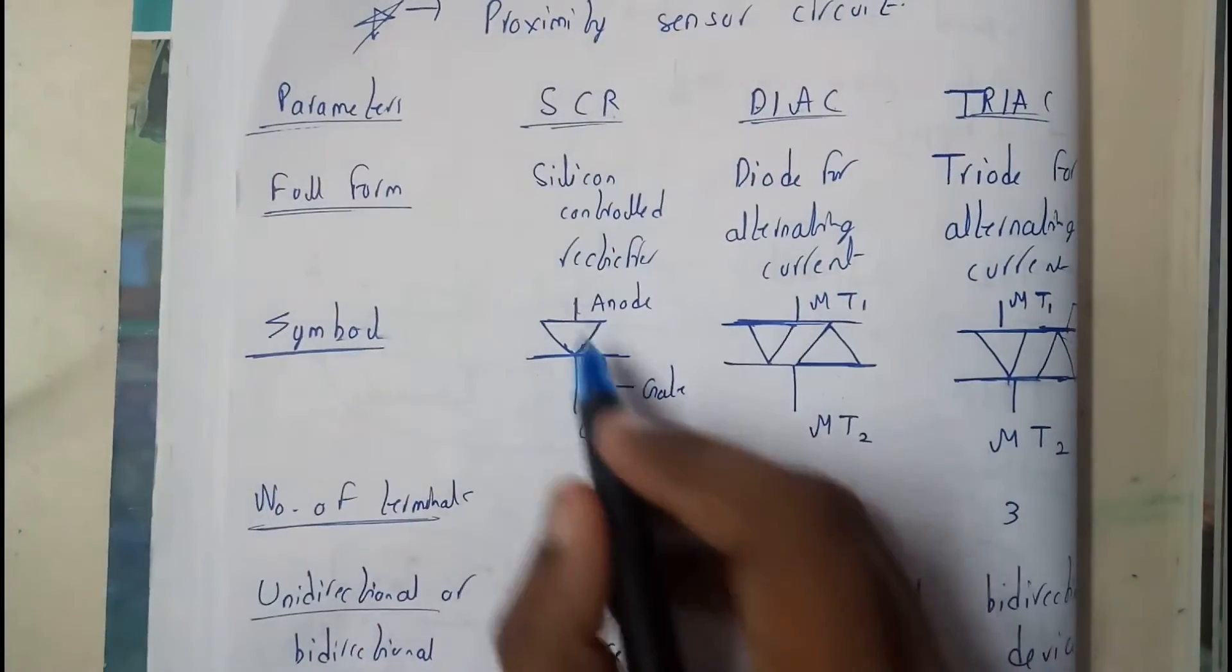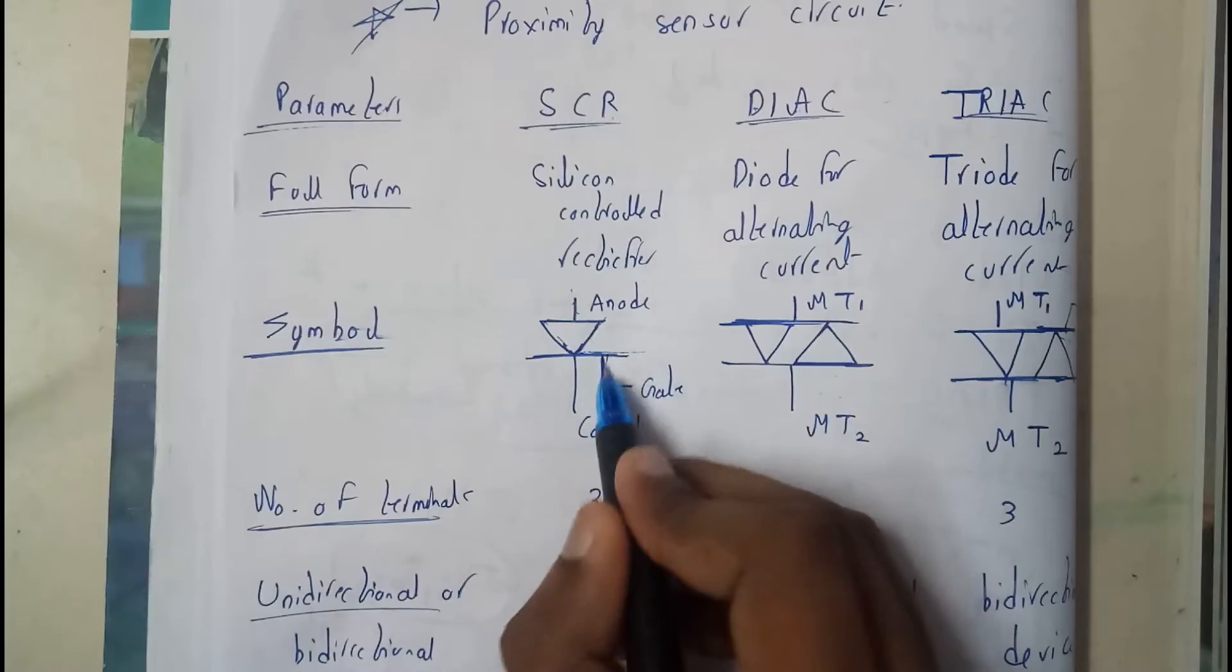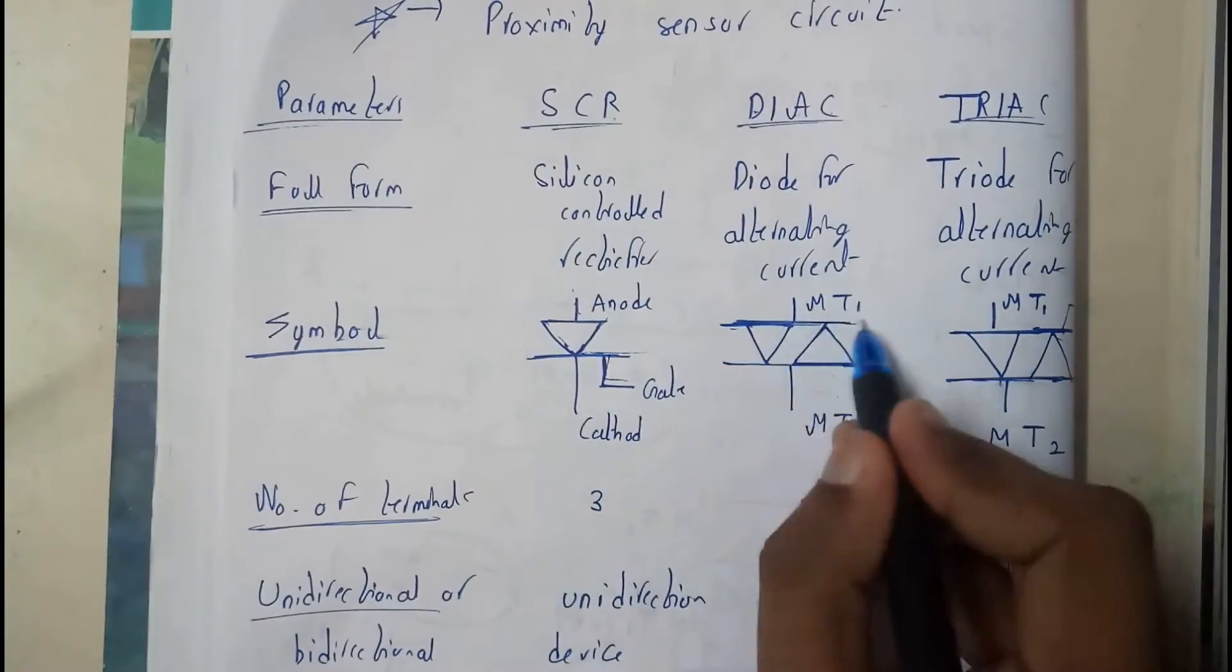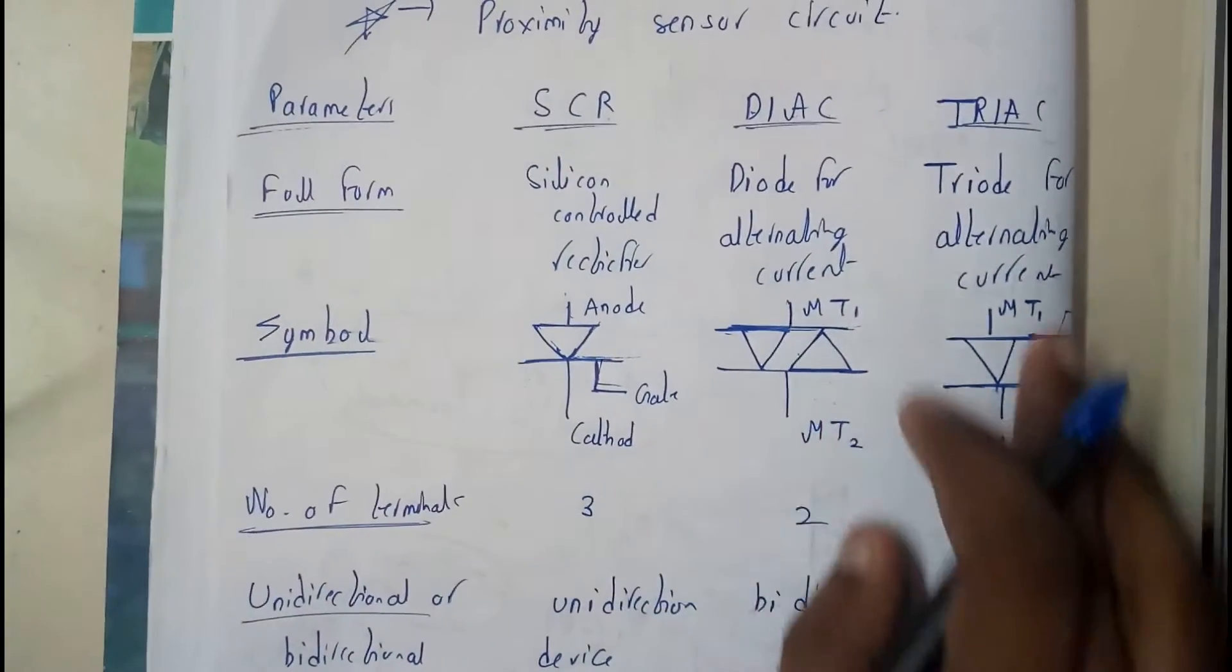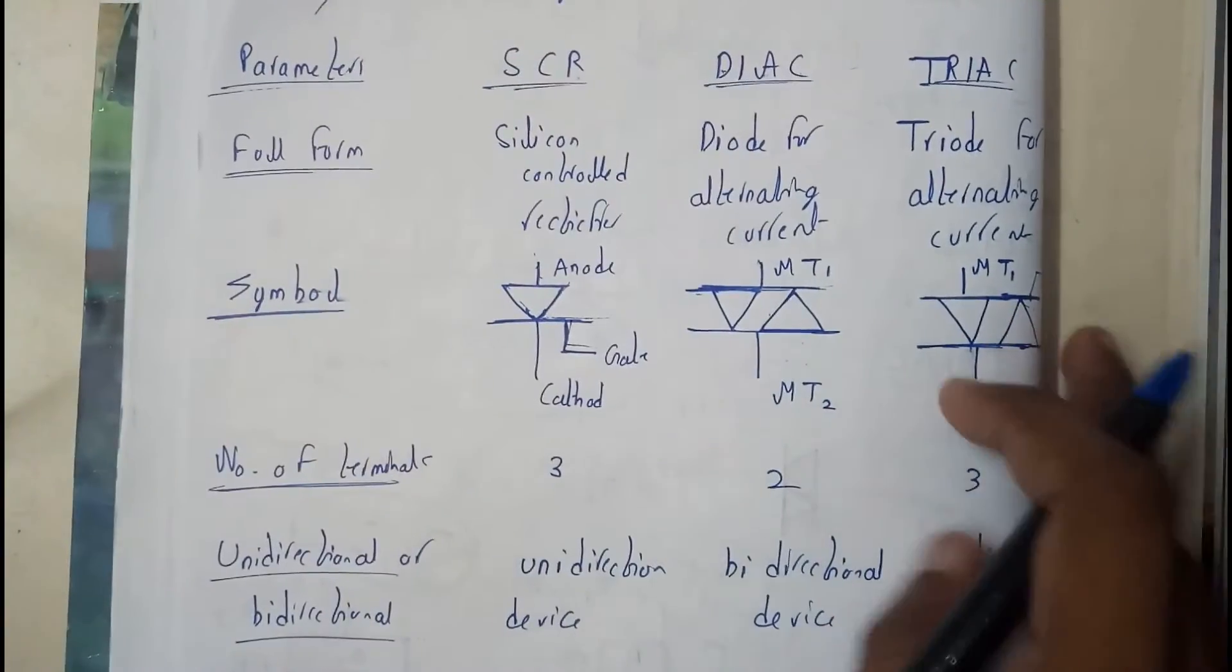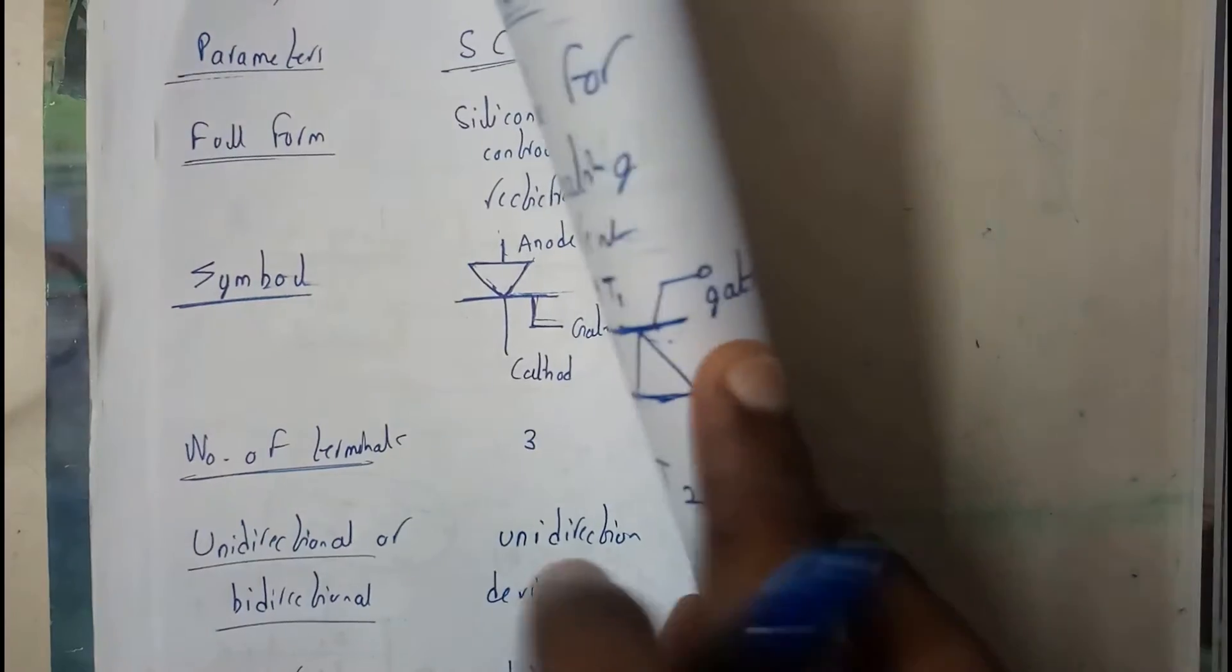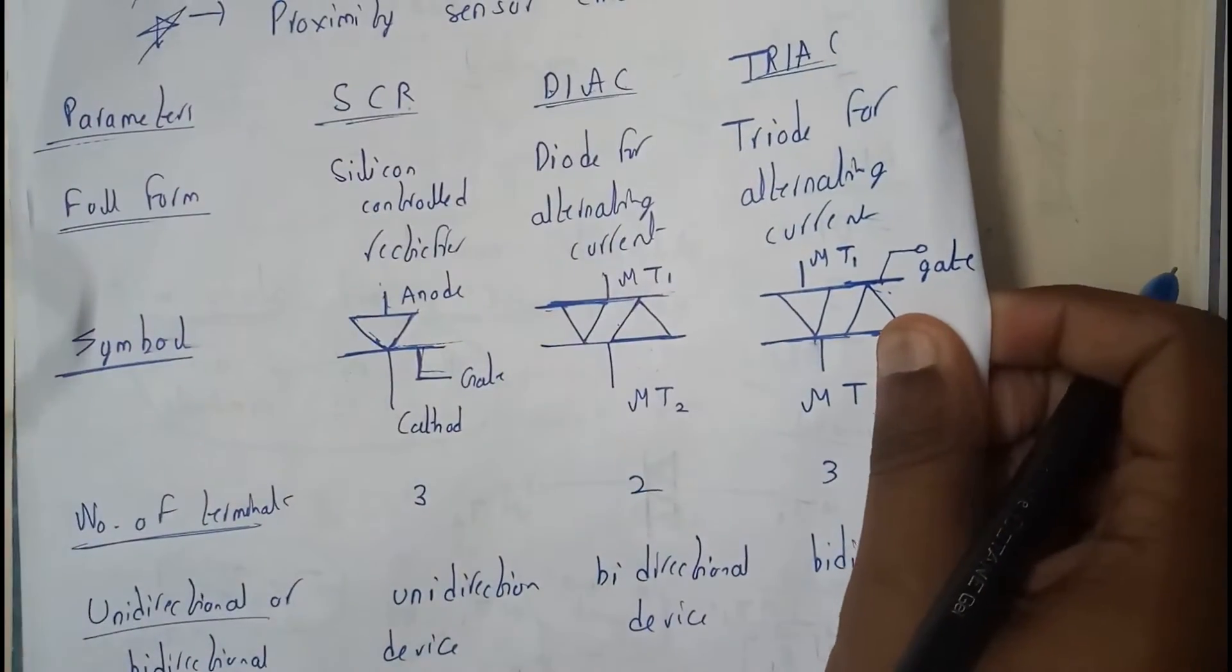The symbol for SCR is a diode with a gate. For DIAC, it's two back-to-back PN diodes. Similarly, for TRIAC, it's two back-to-back with a gate.